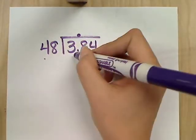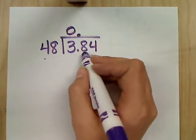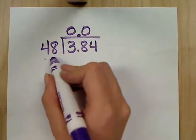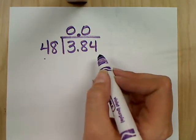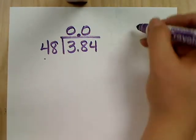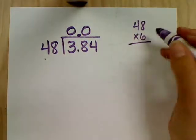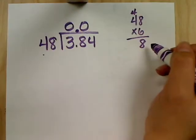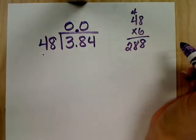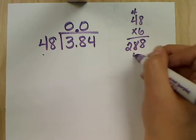Because, again, we want to figure out how much it costs for one ounce. So the per ounce thing goes on the outside. First thing I do needs to be bring the decimal up. 48 into 3? Zero. 48 into 38? Zero. Also zero. 48 into 384? Six. Let's try it. 48 times 6? What's 8 times 6? 48. 6 times 4? Plus 4? 8. 288. Can I go in another time? Yeah.